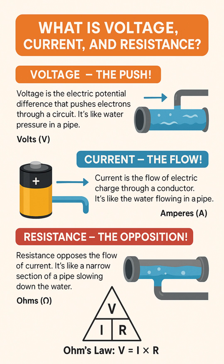Next, we have current, which is the flow. Current is the rate at which electric charge, or electrons, actually flows through a conductor. Following our analogy, if voltage is the pressure, then current is the volume of water flowing past a certain point in the pipe. Current is measured in amperes, or amps for short, and is symbolized by the letter A.